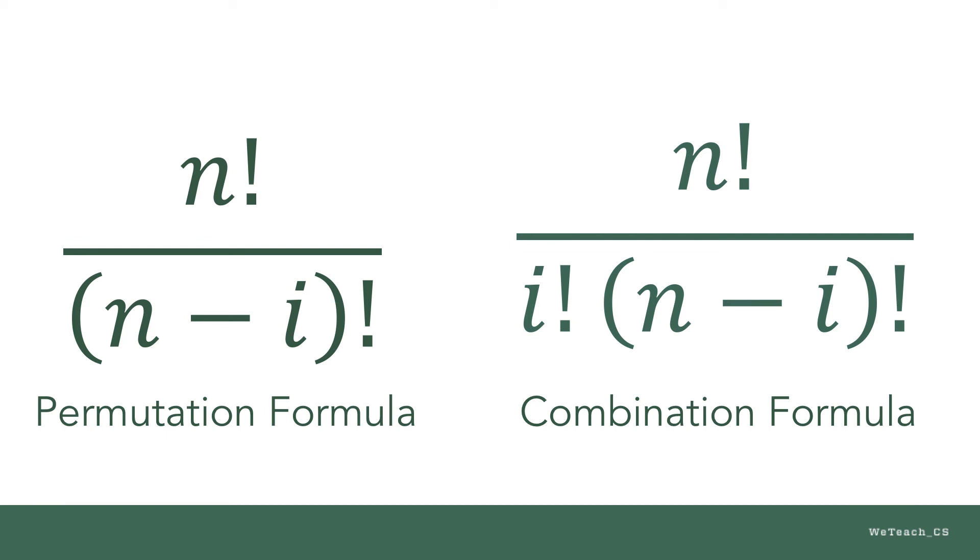Remember that permutation helps us to calculate the number of possibilities of arranging a set of items when the order of those items is important. Combination allows us to calculate the number of possibilities of arranging a set of items when the order of those items isn't important.